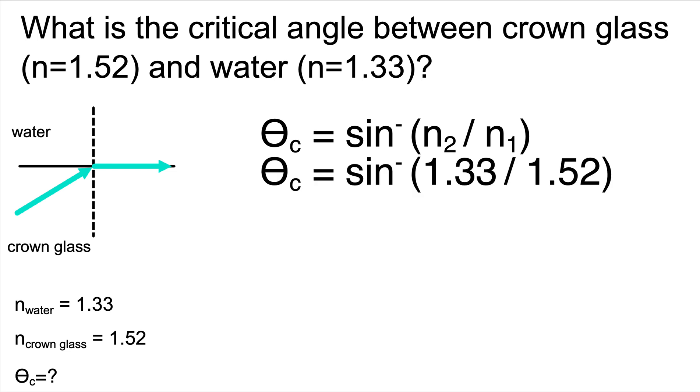Let's plug in our numbers. That would give us the critical angle equals the inverse sine of 1.33 divided by 1.52. When we divide those numbers in our calculator, we get that the critical angle equals the inverse sine of 0.858.